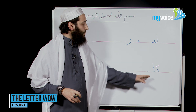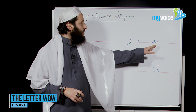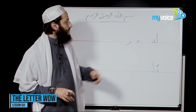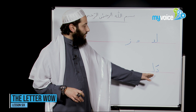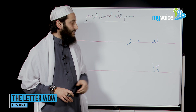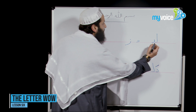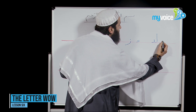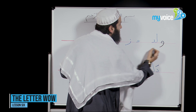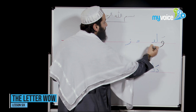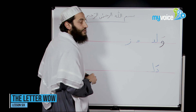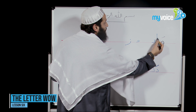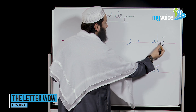We have three words. In the first one, we have to put WAW in the beginning. In the second, WAW in the middle. In the third, we connect WAW at the end. Let's start. The first word is WALAD, which means boy. Notice that WAW is close to LAM but never connects.